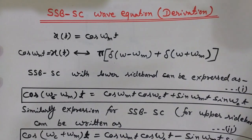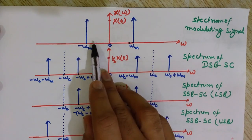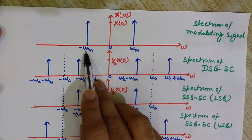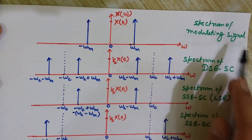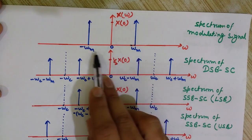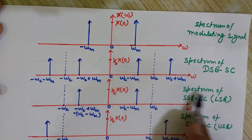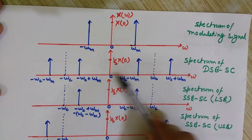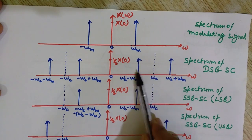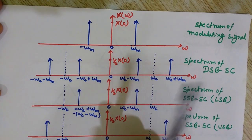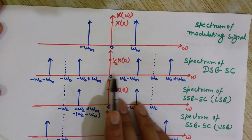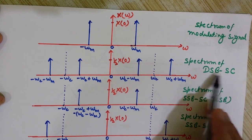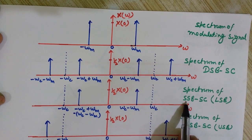Looking at the diagram, the Fourier transform of x(t) = cos(ωm·t) shows impulses at +ωm and −ωm. I have shown three spectra: one for the modulating signal, one for DSB-SC with two sidebands, and the negative frequency portions. Focus on the positive frequency side, since negative frequencies are not practically realizable.